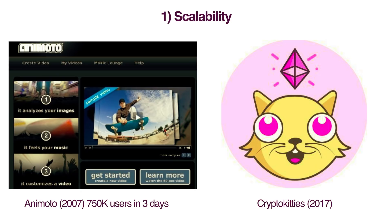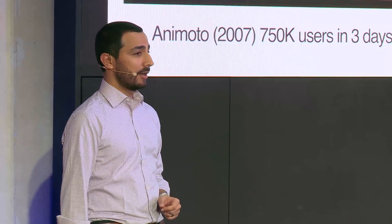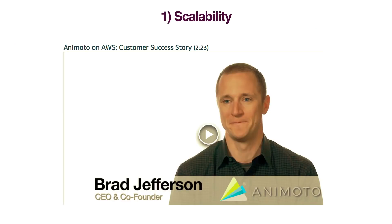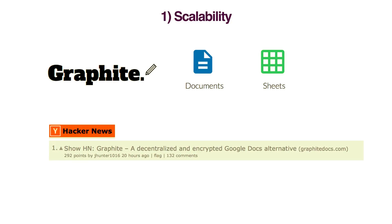CryptoKitties — they're actually in the audience here today — took off on a decentralized computing platform called Ethereum. But there's a big difference. What happened with Animoto became a success story still featured on the Amazon Web Services page. What happened with CryptoKitties led to very different headlines, because the underlying infrastructure is not there yet in terms of scalability — we're still in very early days. But that is changing. We have apps like Graphite, which is built on Blockstack, and just yesterday they were on top of Hacker News. This app is built in a very different way and can actually take millions of users and still be able to work.